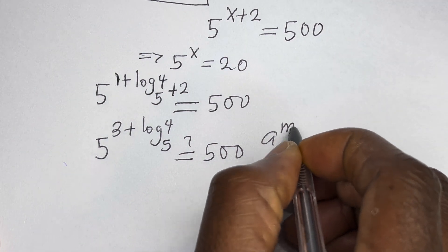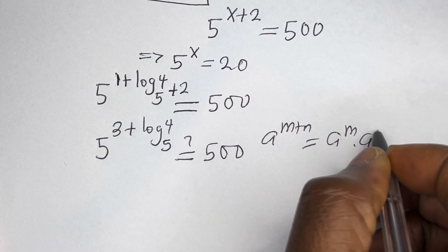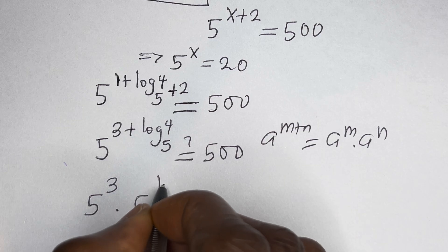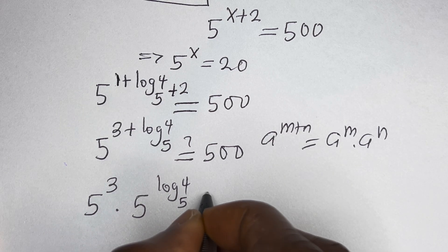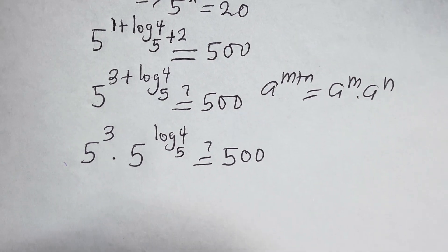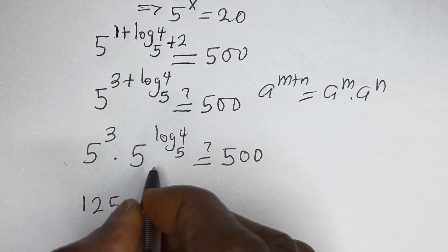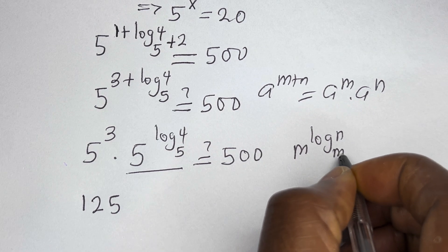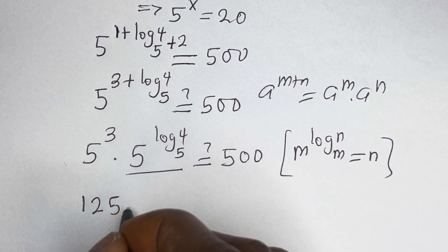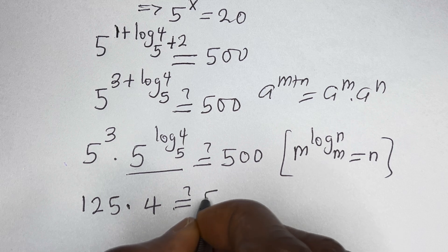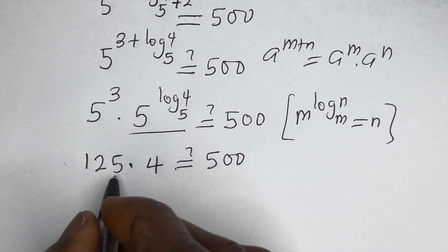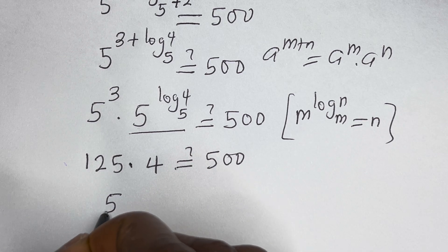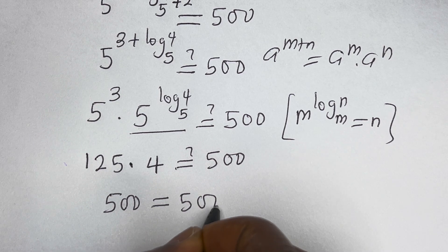If you have a raised to power m plus n, this is equal to a raised to power m multiplied by a raised to power n. This can be written as 5 raised to power 3 multiplied by 5 raised to power log base 5 of 4 must be equal to 500. 5 raised to power 3 is 125, and the rule is if you have m raised to power log base m of n, this equals n. So this is 125 multiplied by 4, which must equal 500. 125 times 4 is 500, which is true.